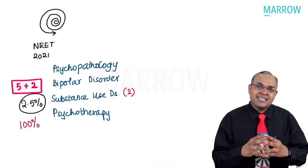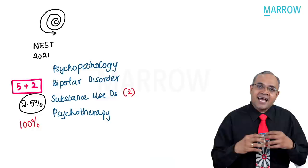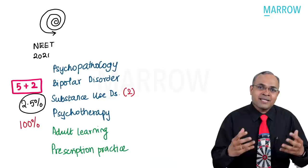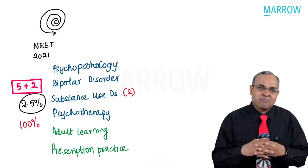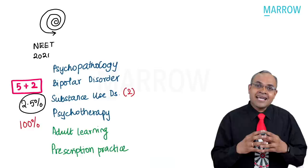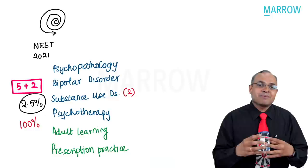The questions came from these areas: one from psychopathology, one on bipolar disorder presentation, one on psychotherapy, and two on substance use disorders. Two additional integrated points covered adult learning theories and prescription practice. The concepts explained are mostly correct, though since it's a recall, some choices may be inaccurate. With this understanding, let's go into the first question.